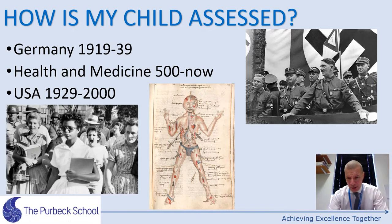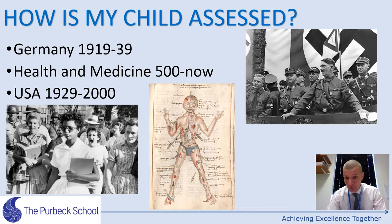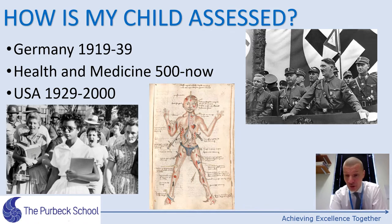The way the exams work in history is there are three exams. Normally there would be four, but because of COVID the exam boards reduced it to just three exams this year. One exam is Germany — German in Transition from 1919 to 1939. That's Weimar Germany and Nazi Germany, and that's an hour long.